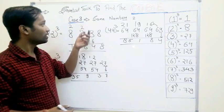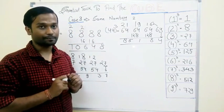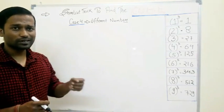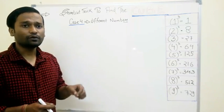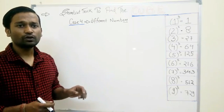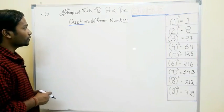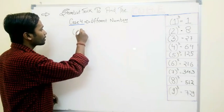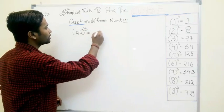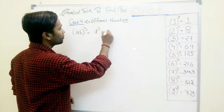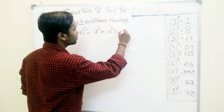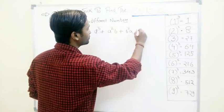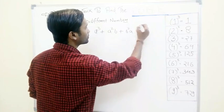This is our case number 3 where both the digits are the same. Now case number 4: different numbers — those whose digits are different to each other, like 34, 58, 72, 89. Before we start, we have to learn the formula: (a + b) cubed equals a cubed plus a squared times b plus b squared times a plus b cubed.